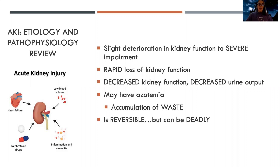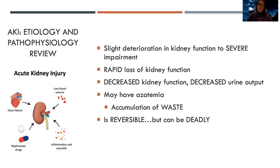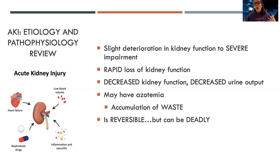When we talk about AKI, or acute kidney injury, there's a spectrum of things that can happen. It can be just slight deterioration where the kidneys are mostly working but have lost a little function, or it can be severe impairment. This is a rapid loss of kidney function. There's decreased kidney function, decreased urine output, and what's called azotemia - an accumulation of waste, because one of the main functions of the kidneys is to get rid of waste. AKI is reversible, but it can lead to chronic kidney disease and also can be deadly.